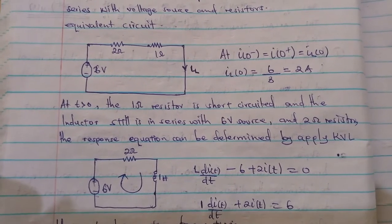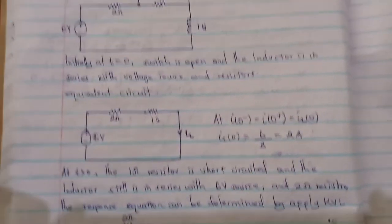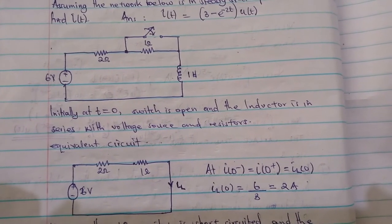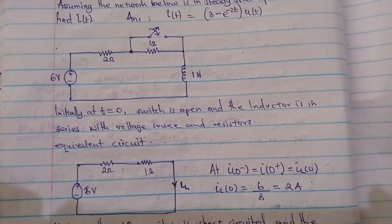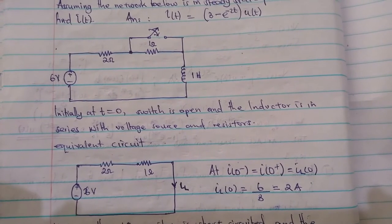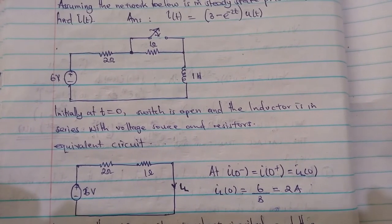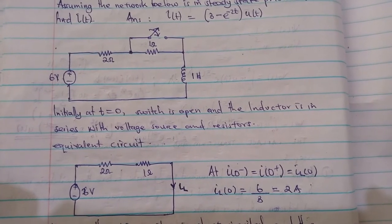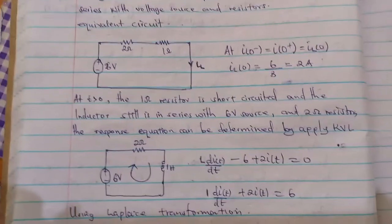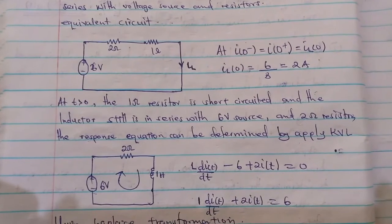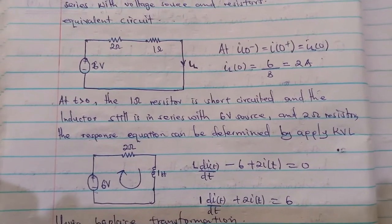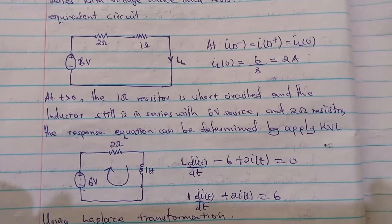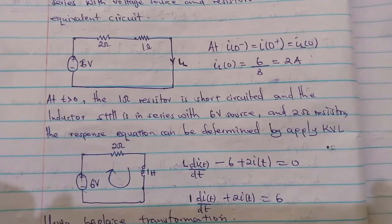The next step is to analyze the circuit after replacing the inductor and closing the switch. When the switch is closed, we short-circuit the one-ohm resistor, meaning current will not flow through it — instead it flows through the closed switch and then through the inductor. This diagram represents the circuit when time is greater than zero: the one-ohm resistor is short-circuited and the inductor remains in series with the six-volt source and the two-ohm resistor.